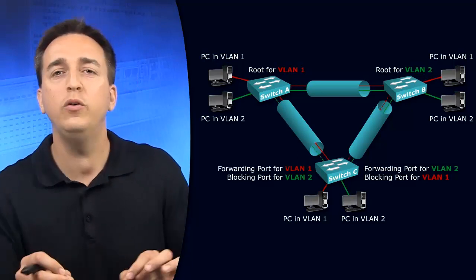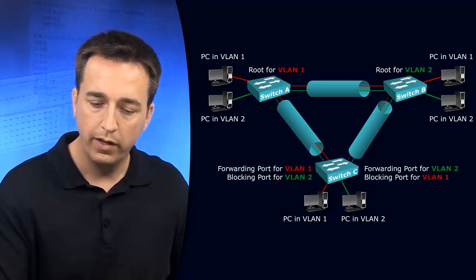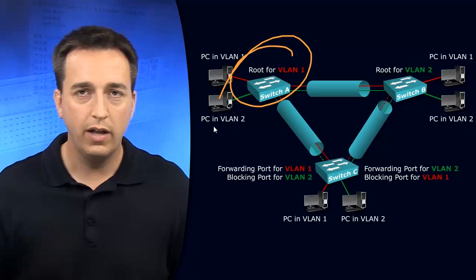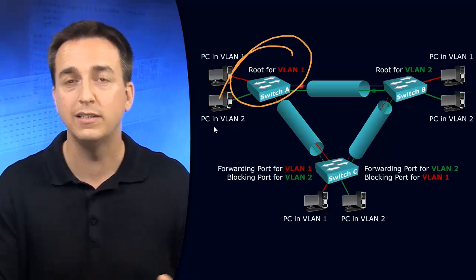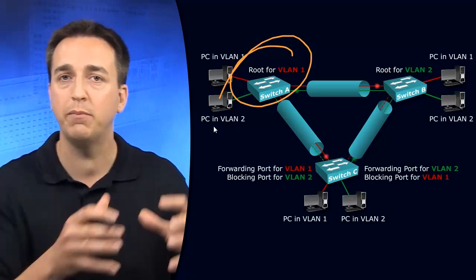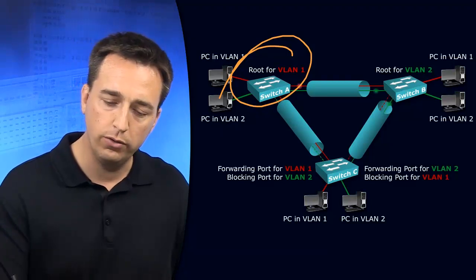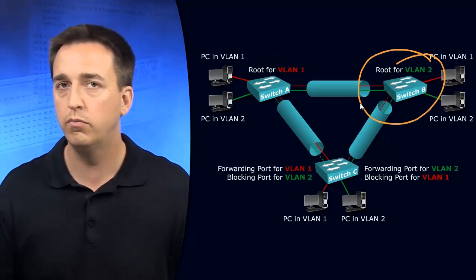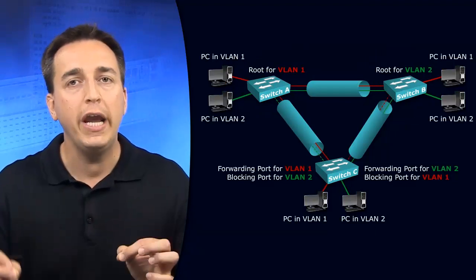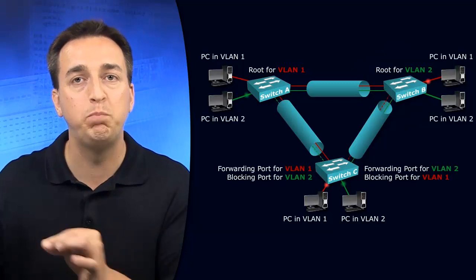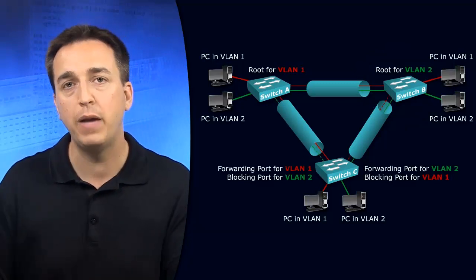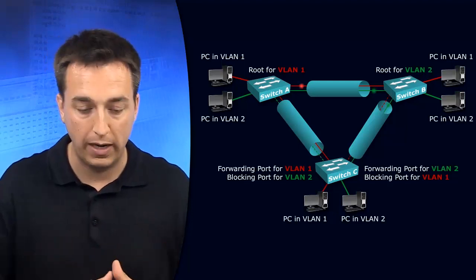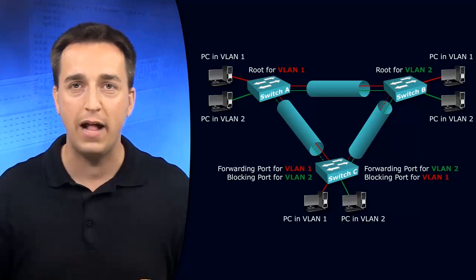However, what if you change some of that information? For example, instead of having all the VLANs using the same switch as their root bridge, what if you state that switch B is going to be the root for VLAN 2? By doing so, you change the way the topology is built by Spanning Tree Protocol, and when you change the topology, you can achieve load balancing.